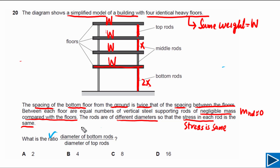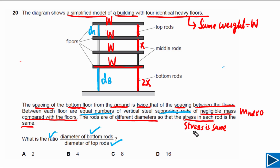The question is asking us to find the ratio between the diameter of the bottom rods and the diameter of the top rods. There are equal numbers of rods in each section. Let's say the diameter of the bottom rods is db and the diameter of the top rods is dt. The stress in each rod is the same — this is the main concept we need to answer this problem.